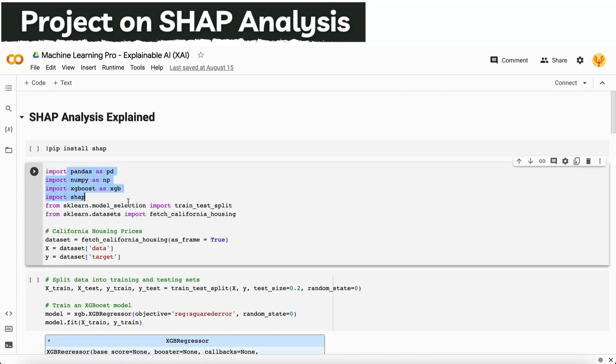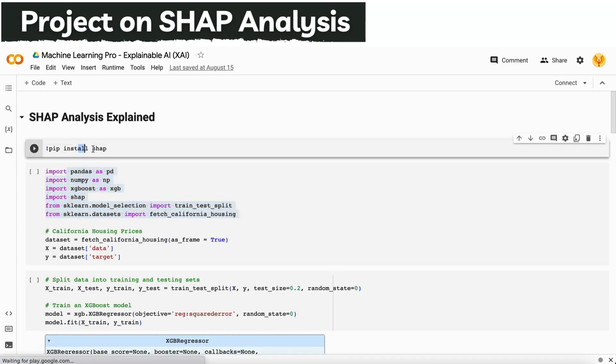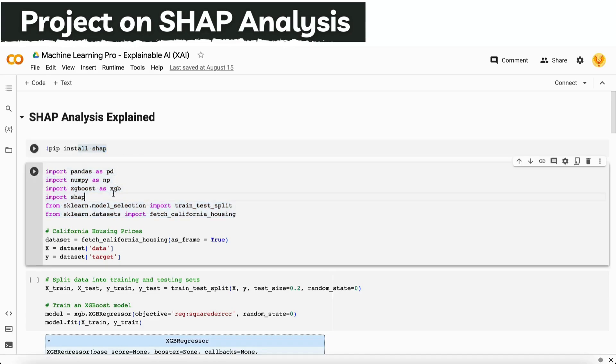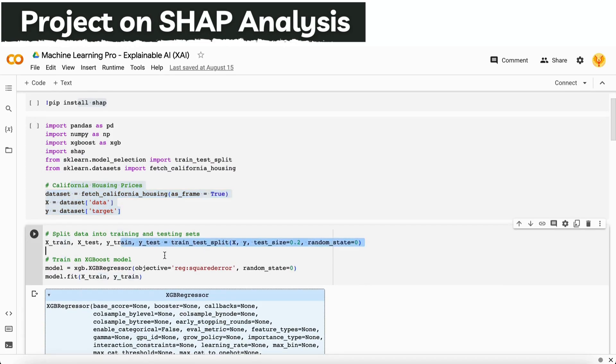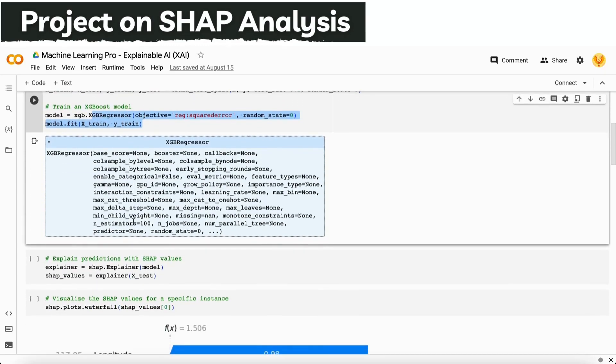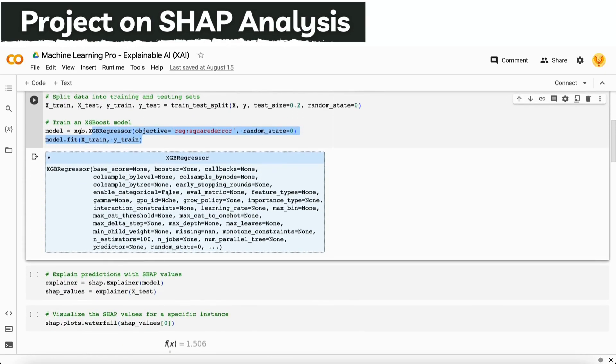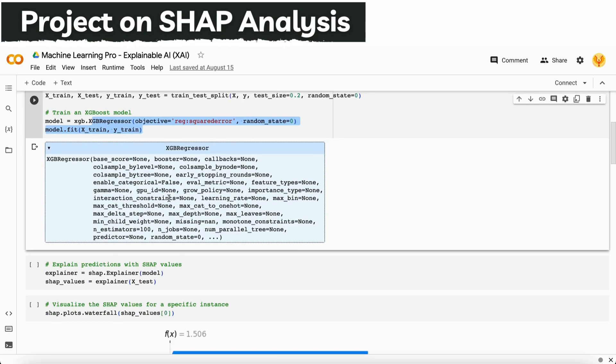Then I get the California house pricing dataset, split it into test and train, fit on my model, and train my model on this dataset. After getting trained, now the SHAP analysis comes here. I need to know the explainability of my XGBoost regressor model.